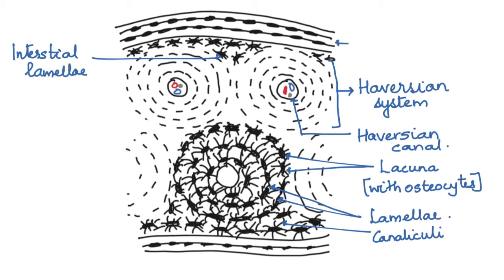There are lamellae that is present towards the periphery of the bone. So towards the outer side it is called as the outer circumferential lamellae and the outermost membrane covering the bone is the periosteum.